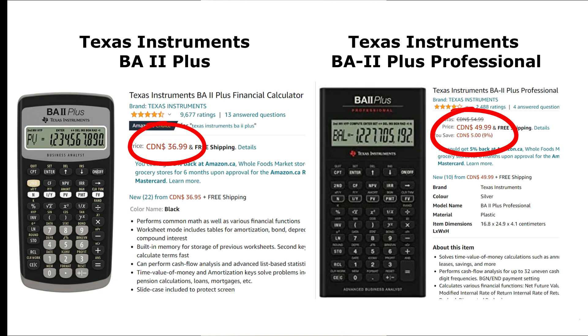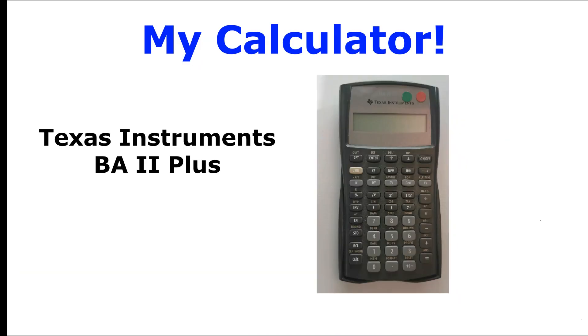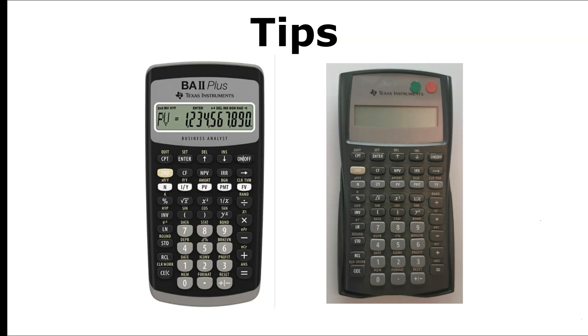So for the additional 30% in price you get some additional calculation features and you have a slot for the battery, whereas the Plus you need a screwdriver to change the battery. I personally have the regular Plus calculator, and I've been using this calculator since 2012 and never faced any issue or even changed the battery. So in my opinion they are the same and if you want to save a couple of bucks just go for the BA2+. For the tips I'll be using my own calculator. It might look a bit different from the one you saw in the picture, because mine is just an older version, but the function and buttons are exactly the same.